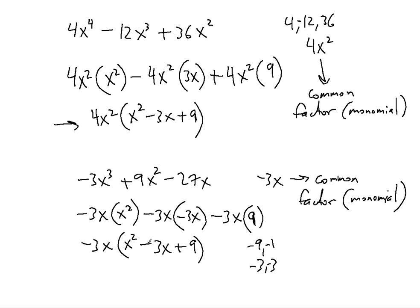So negative 9 and negative 1, the sum will not be negative 3, it will be negative 10. And the sum of negative 3 and negative 3 will give you negative 6, which is not negative 3. So x squared minus 3x plus 9 in both cases, in both of these examples, cannot be factored.